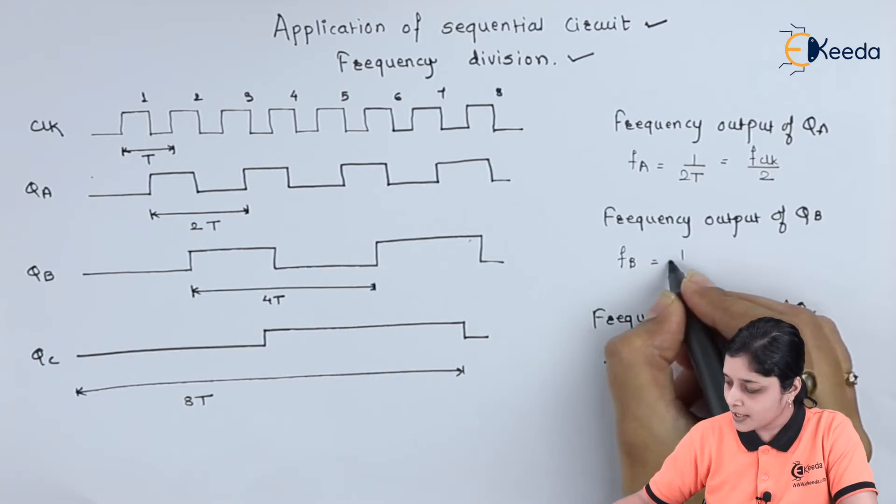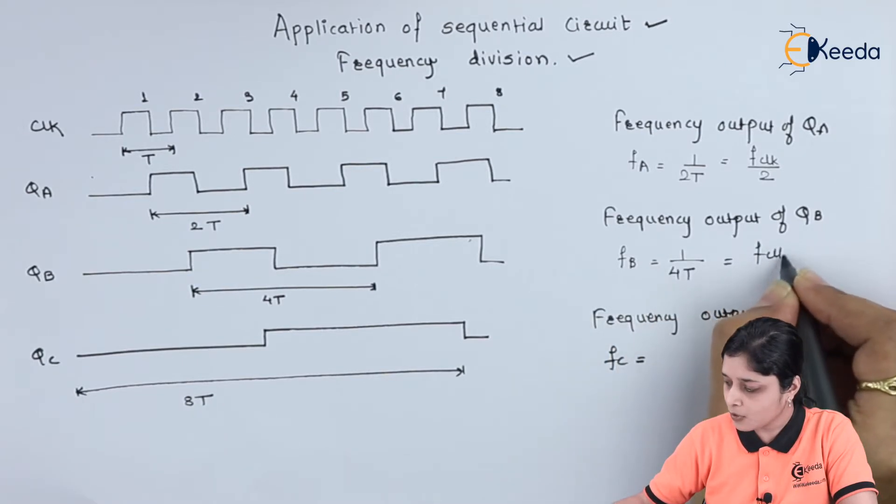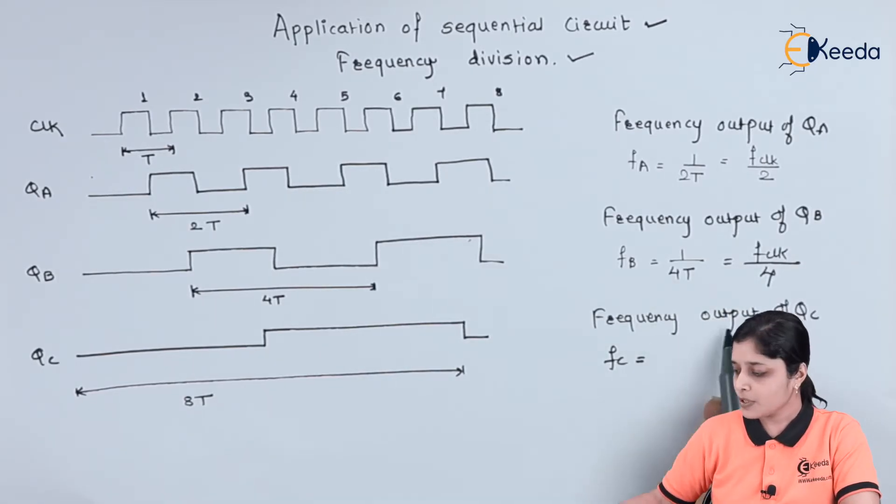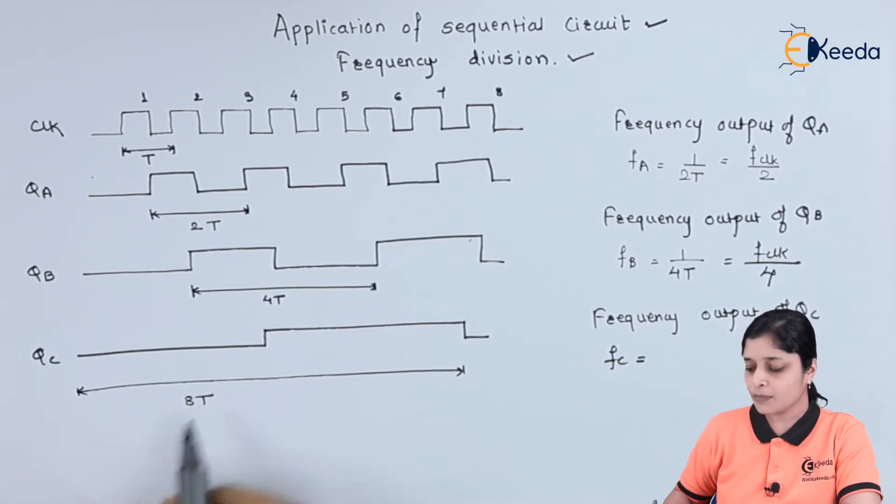So that's why we can write here 1 upon 4T, and here we can write F clock by 4. Now we will focus on the frequency output of QC.